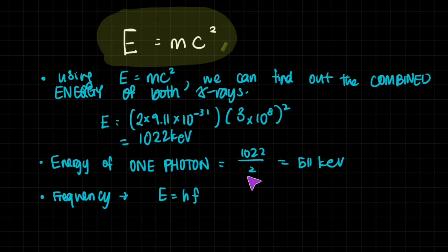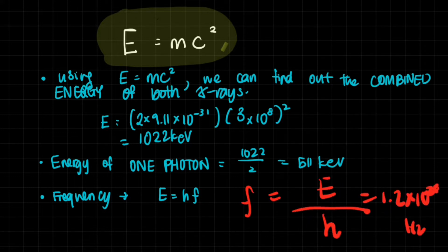Now the energy of one photon, you just divide it by two, and there you go. Now that we have the energy of a single photon, we can find out the frequency of that specific photon as well. The frequency is, we have this very handy equation. In order to get the frequency, you just divide the energy by Planck's constant. This gives us approximately 1.2 times 10 to the power of 20 hertz.